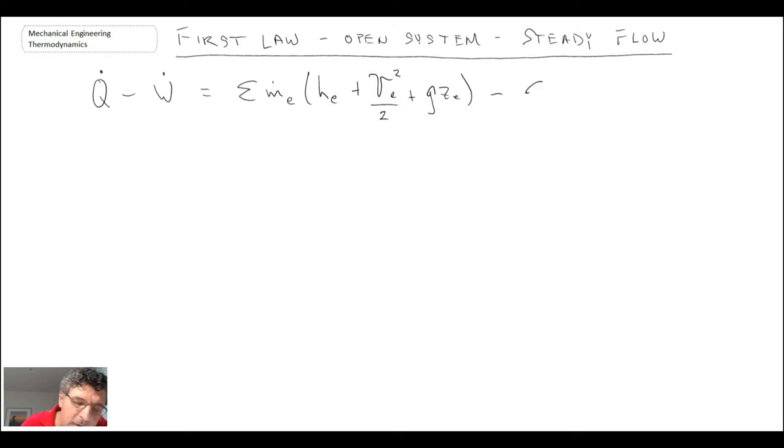And then we subtract the sum of all mass streams leaving our control volume. So that is the first law for an open system steady flow.